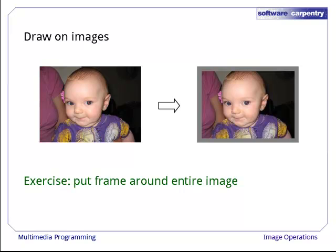As an exercise, try combining the ideas from the previous examples to put a frame around an entire picture so that the output is 20 pixels wider and taller than the input.